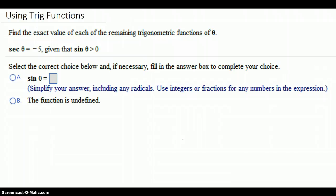The question says, find the exact value of each of the remaining trigonometric functions of theta. And they give you that secant of theta is negative 5, given that sine of theta is positive.